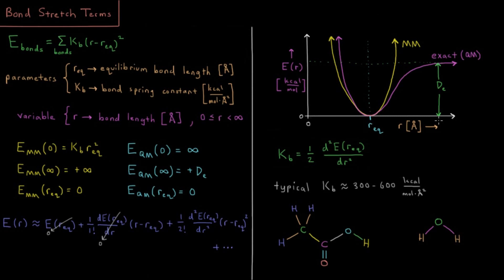That gives us a graph which looks sort of like this. If we were to compute the exact quantum mechanical potential energy surface as a function of the bond length or internuclear distance, then we get something that looks like this purple line here.